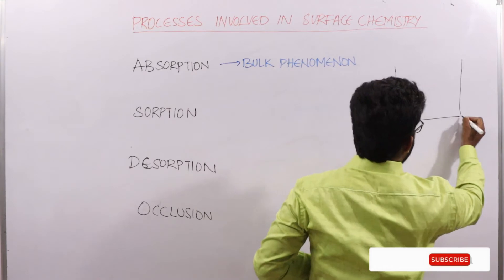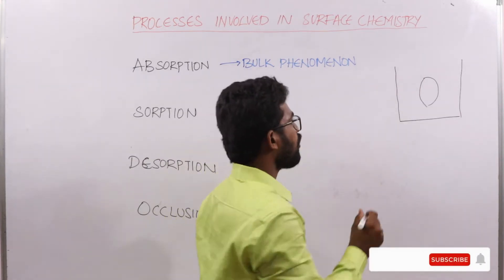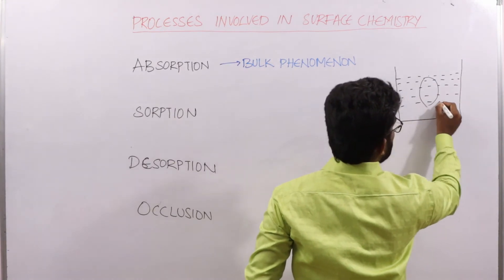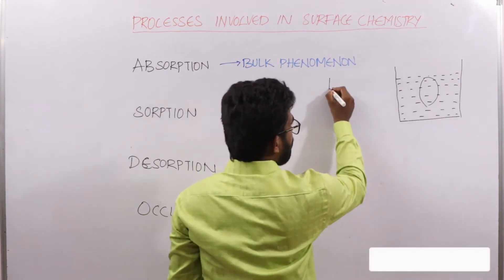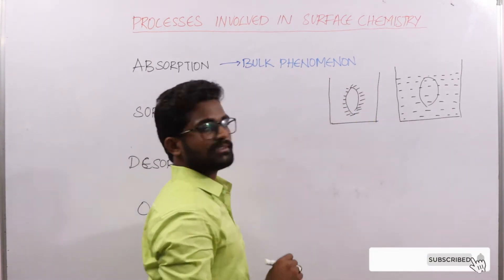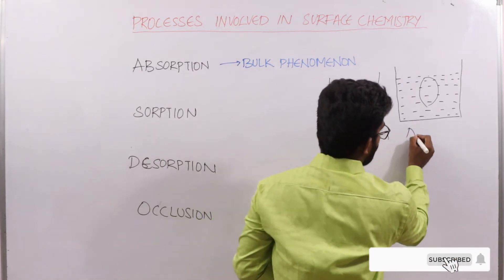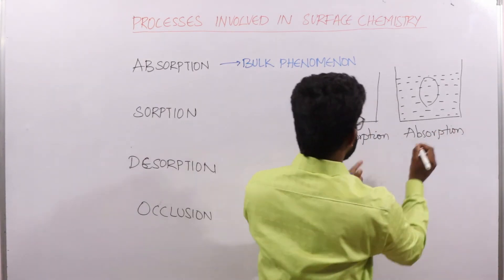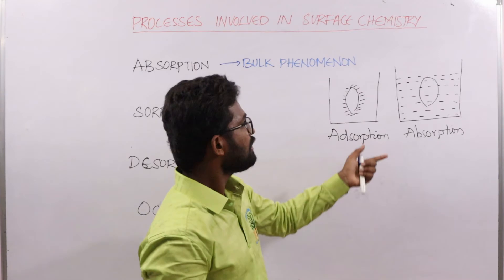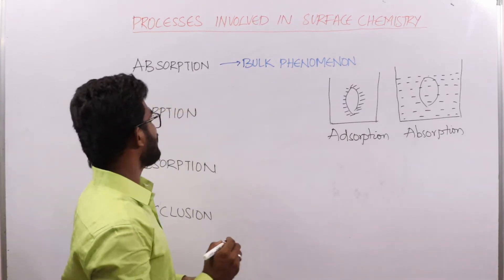In absorption, whenever a substance is placed in contact with any medium, the molecules of that medium are uniformly distributed throughout that substance. This uniform distribution of molecules of the medium into the substance is called absorption. So in adsorption, molecules accumulate on the surface, which is why adsorption is a surface phenomenon, while absorption is a bulk phenomenon.